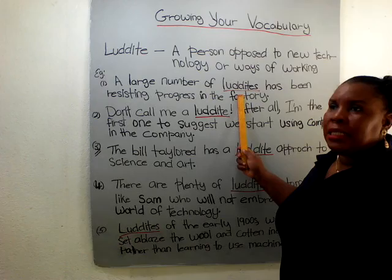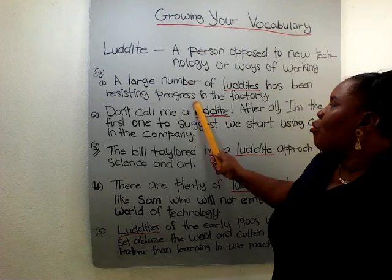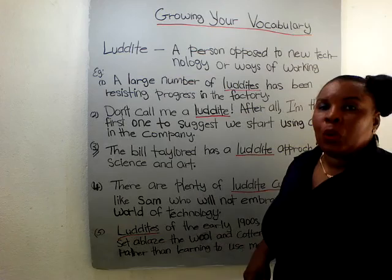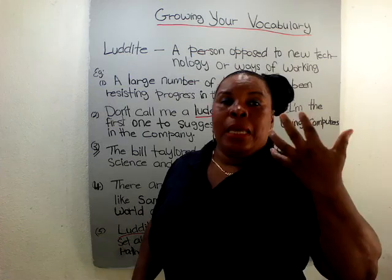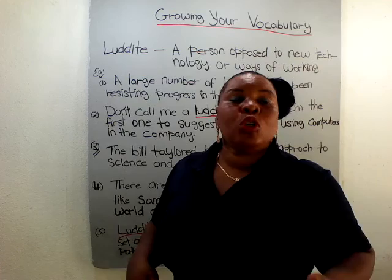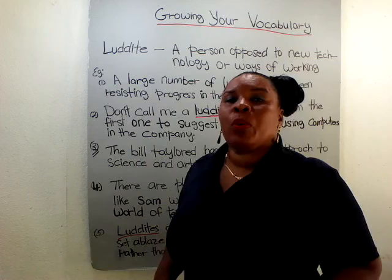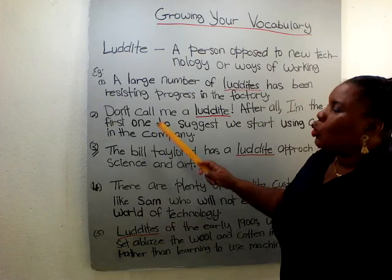A large number of luddites has been resisting progress in the factory. So they don't want to be working in the factory when they are getting new technology that they would have to learn how to use — certain machines to weave the wool or for whatever that new technology is going to bring to the company. They want to be doing the physical work and getting their money and go home.